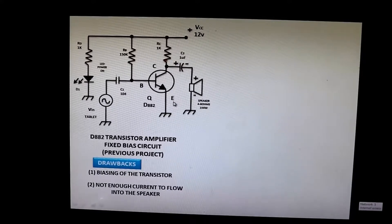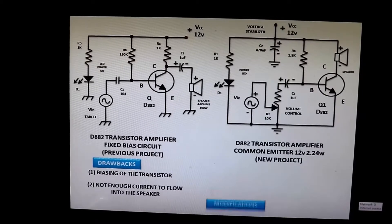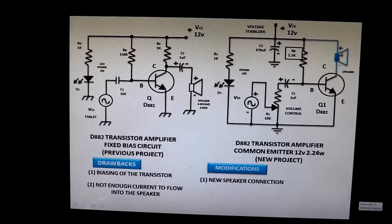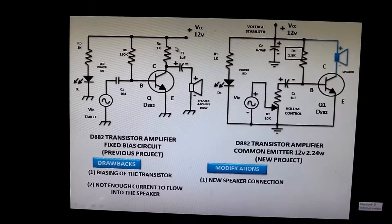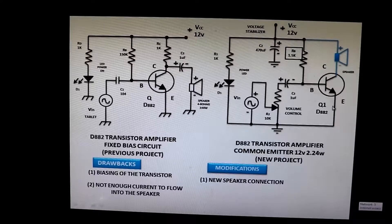So I decided to create another circuit — this is the new project. The modifications include a new speaker connection: the positive is connected to the positive supply and the negative to the collector side of the transistor. We are not using the coupling capacitor anymore, and the load resistor is now removed because the speaker is located between the voltage supply and the collector of the transistor.